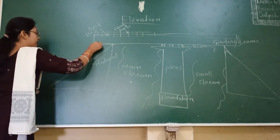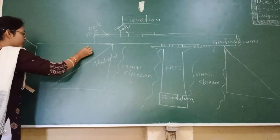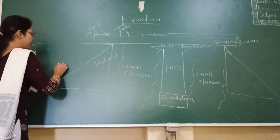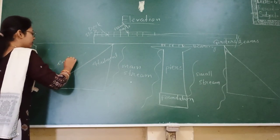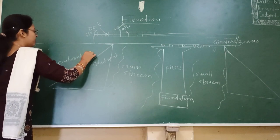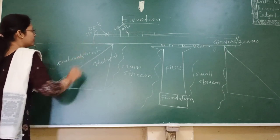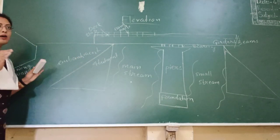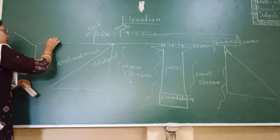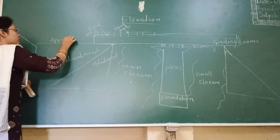Another thing — the part which connects the ground level to the bridge. The ground level — what we call the approach — has an embankment. The part which connects the ground surface to the bridge is known as approach by embankment.